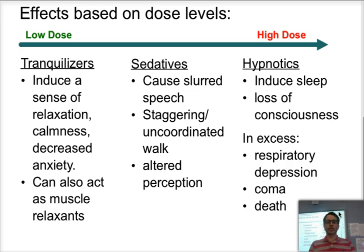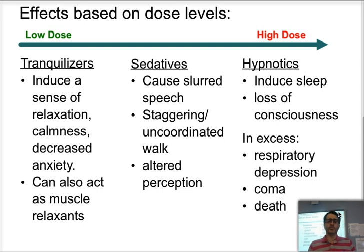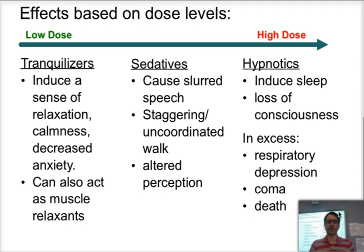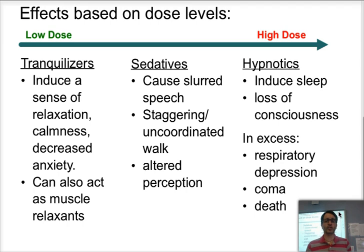If you increase the dose to a mid-range dose, you're going to have what are called sedatives. They can cause slurred speech, staggering and uncoordinated walk, and an altered perception — they really bring you down much more than a tranquilizer. As we increase the dose further, you can induce sleep or they can cause loss of consciousness and sickness. Those types are called hypnotics.